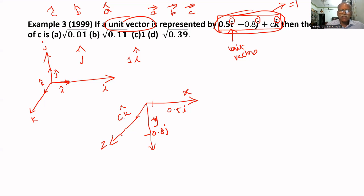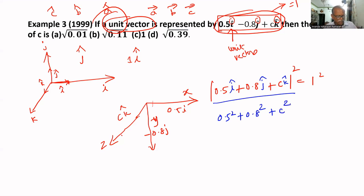First we have to add these two, then add with that. What is the magnitude? I cap, J cap, K cap whole square - modulus square equal to 1. What is the modulus of this value? That is 0.5 square plus 0.8 square plus C square. Because if you add all these together, we have to take the coefficient and square.